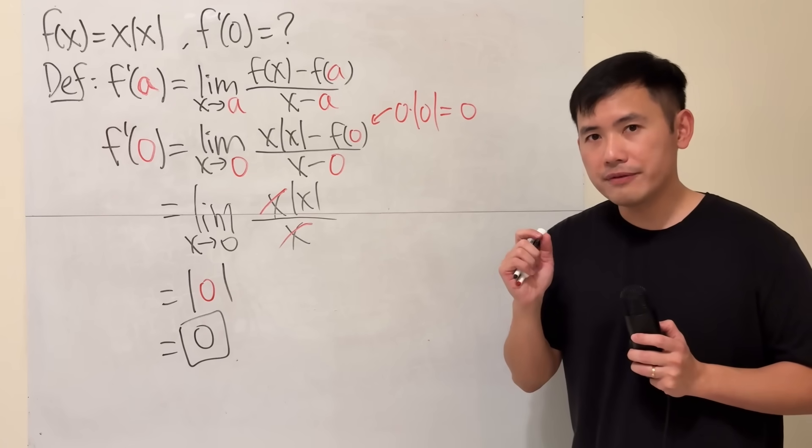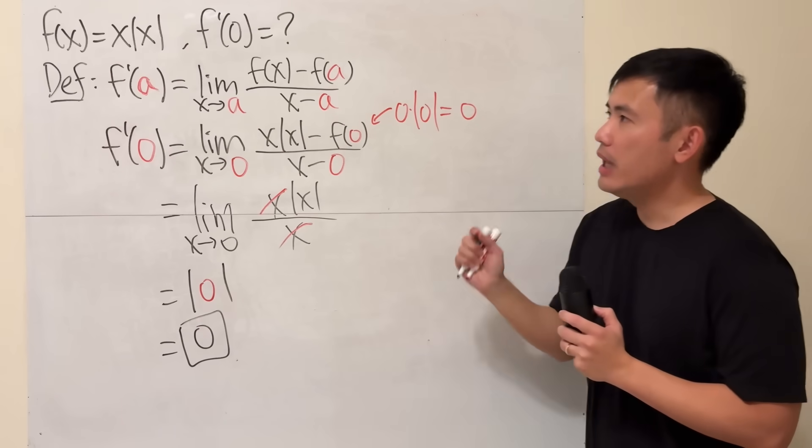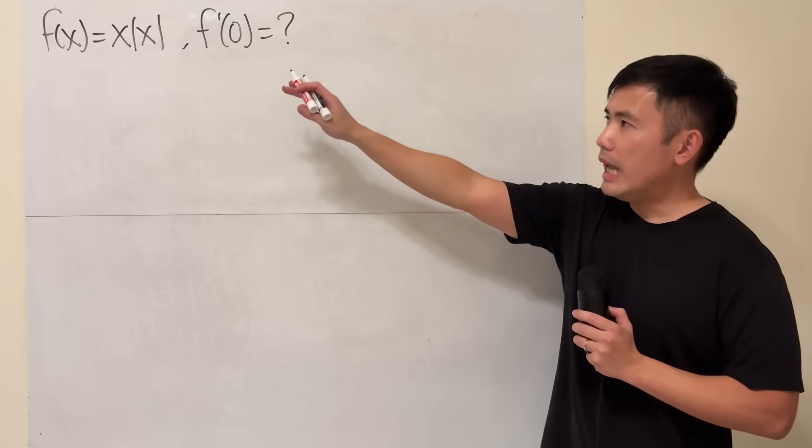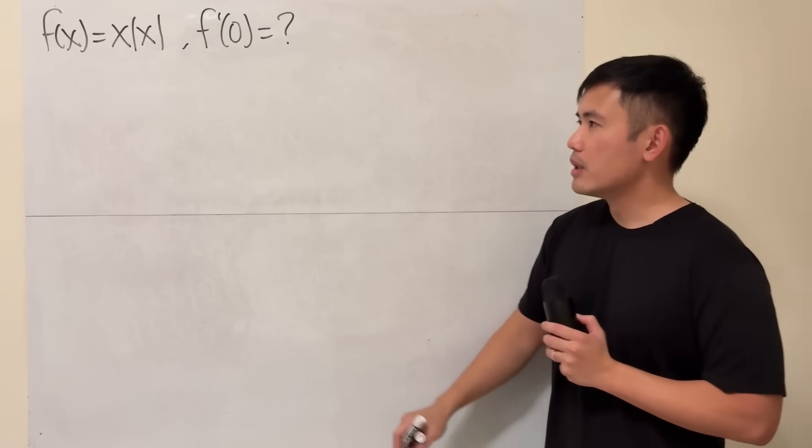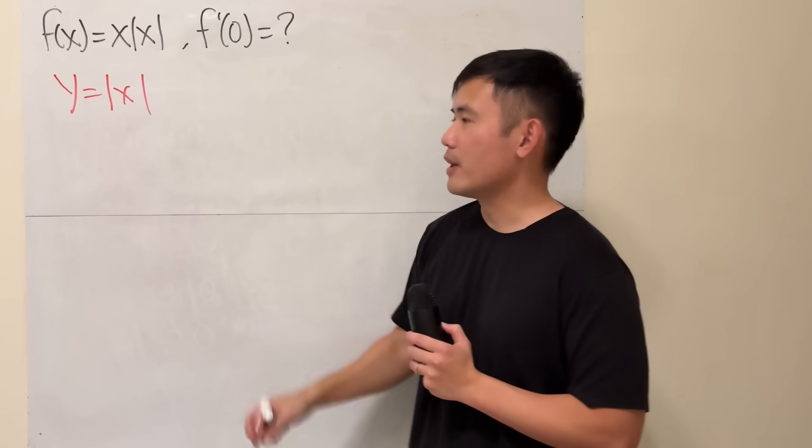In fact, we do have derivative for all x values for this function, x times absolute value of x. Now, let me show you the graph for x times absolute value of x. So, to do that, first we need to talk about just the absolute value of x.